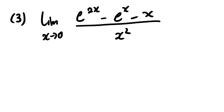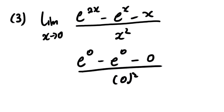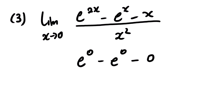Now for the next example, when we substitute 0 we are going to have e to the power 0 minus e to the power 0 minus 0, all over 0 squared. Since e to the power 0 is 1, we get 1 minus 1 minus 0 over 0, which gives 0 over 0. So this answer is unknown, and we apply L'Hôpital's Rule.